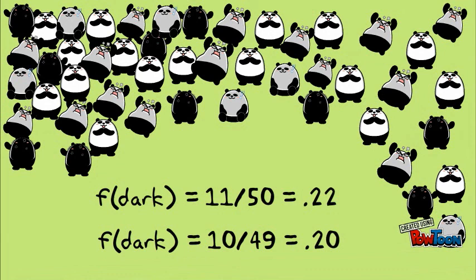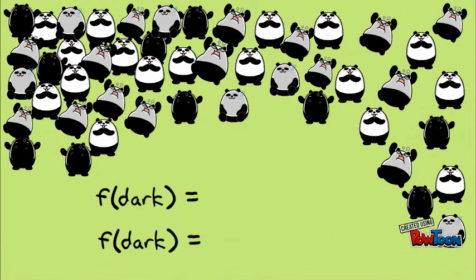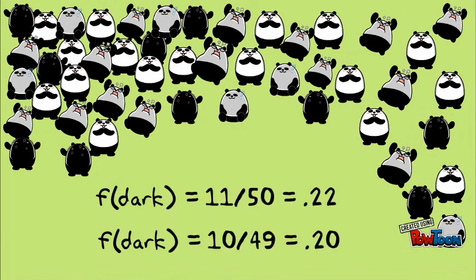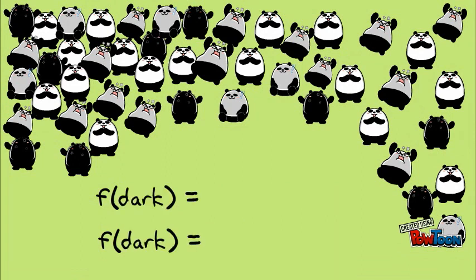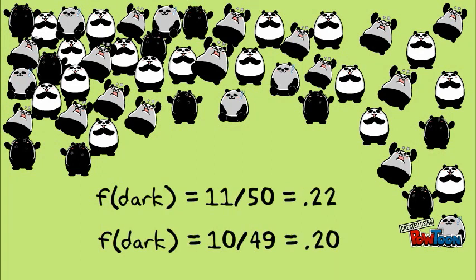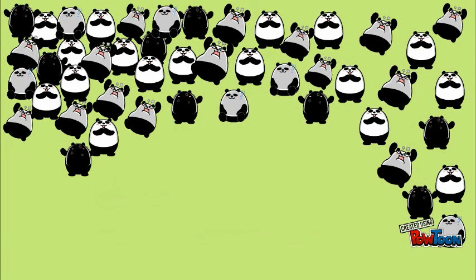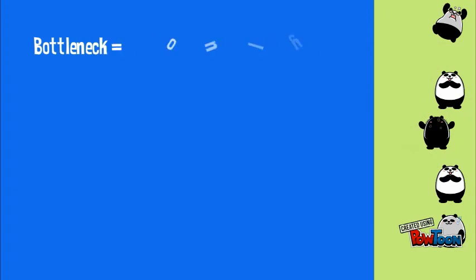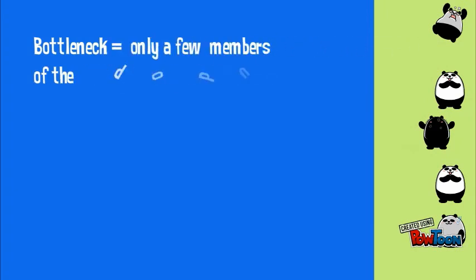The frequency has changed, but it hasn't had a huge effect. If we had an even larger population, losing just one dark panda would have even less effect on our overall frequencies. But now let's suppose that there is a bottleneck — a random loss of lots and lots of our pandas and their genotypes. Let's say they lose habitat.